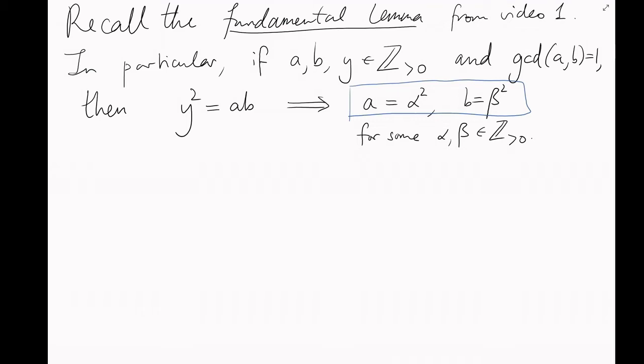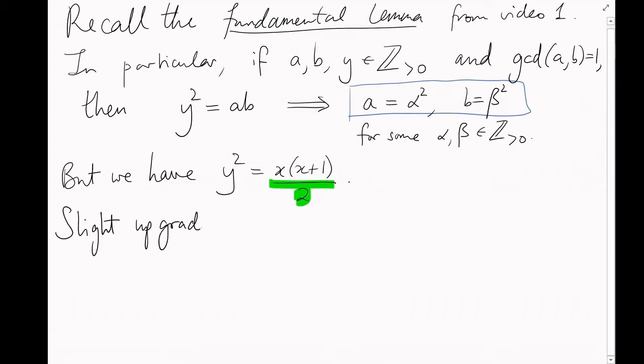But that's not quite what we have here. We have y squared equals x times x plus 1 over 2. Now, both sides are still integers, but this division by 2 runs the risk of taking us outside of the integers somewhere in the middle of the calculation. So, let's slightly upgrade our fundamental lemma.